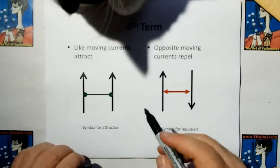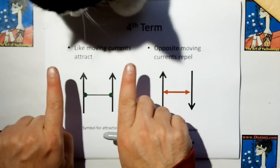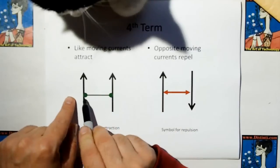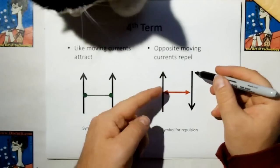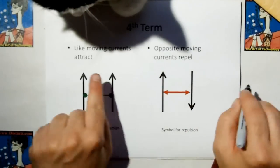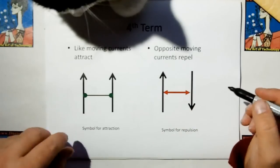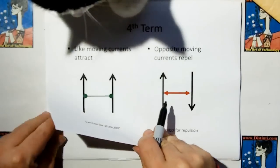This basically says if you have two currents that are moving in a parallel direction, there's going to be attraction between them. This green barbell signifies they're being pulled together. If the currents are moving in the opposite direction, they're going to be pushed apart. The double-ended red arrow is a symbol for repulsion. This is the fourth term of new electromagnetism.